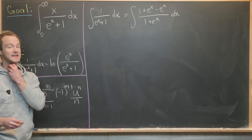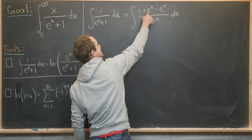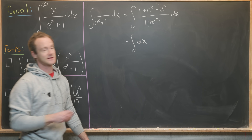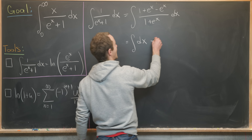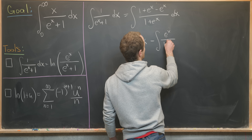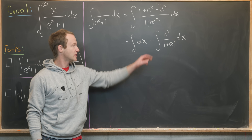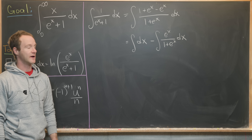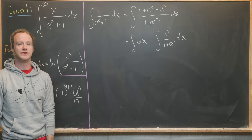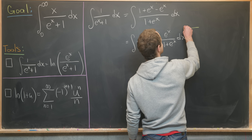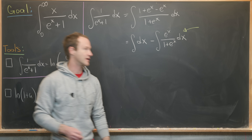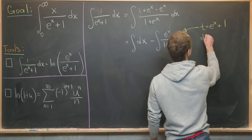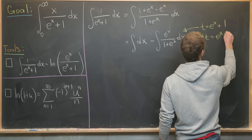Next I'll split this into two integrals. We've got one plus e to the x over one plus e to the x — that's just the integral of dx — and then minus the integral of e to the x over one plus e to the x dx. Looking at the second integral, the derivative of the denominator is exactly the numerator, hinting at a substitution. Let t equal e to the x plus one, making dt equal to e to the x dx.